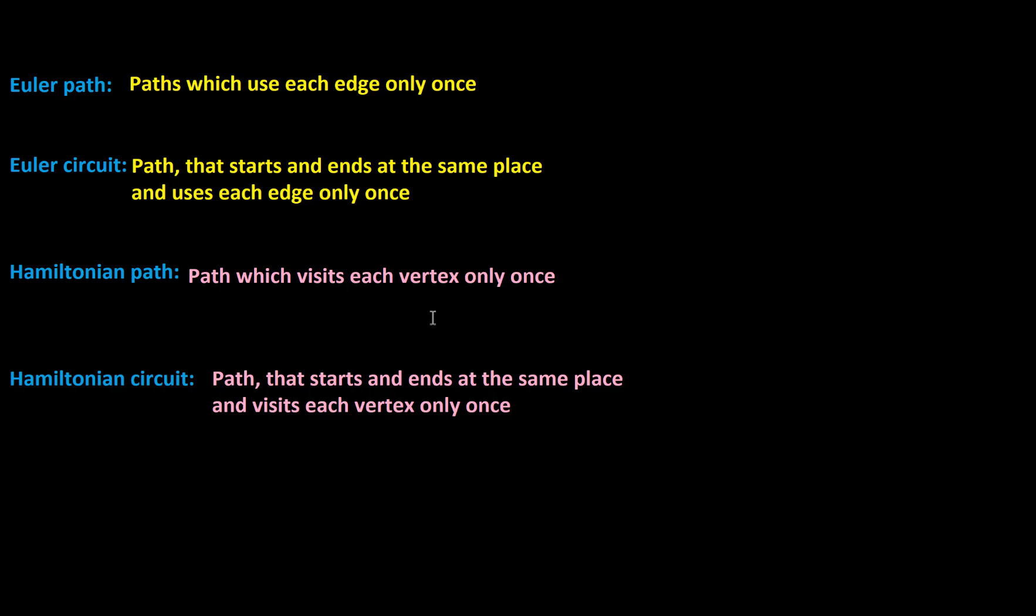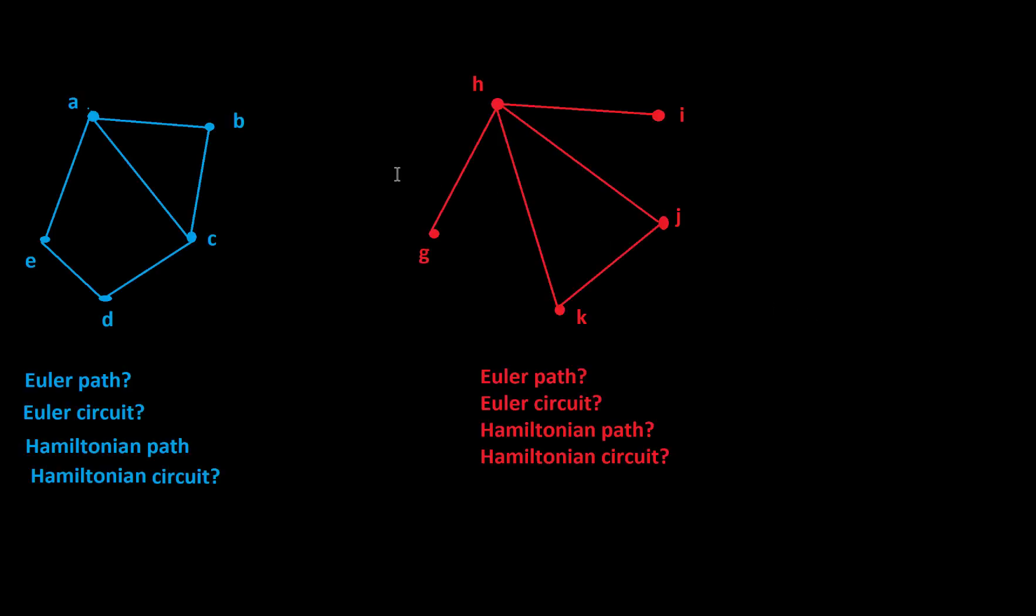All right. So I'd like to give you some examples and see if you can find an Euler path, Euler circuit, etc. So let me pause for a moment. Okay. So let's take a look at two examples here and analyze whether these have Euler path circuits, Hamiltonian paths or circuits. So in the graph on the left here with vertices A, B, C, D, and E, we want to know if it has an Euler path.